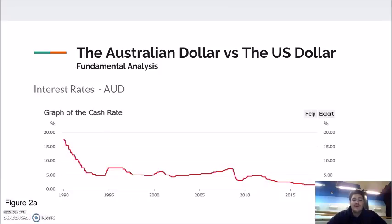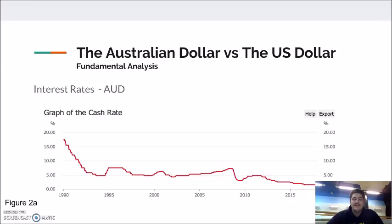This is supported by the correlation between the interest rate and the Australian dollar value as cash rates have risen and fallen. The exchange rate has also appreciated and depreciated in terms of the USD. Between 2005 and 2008, when interest rates were steadily rising, the AUD appreciated against the USD, reaching almost 1 USD by the end of 2007. As cash rates fell by mid-2008, the AUD depreciated against the USD, resulting in a very clear correlation.